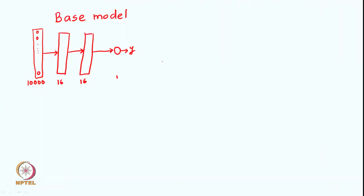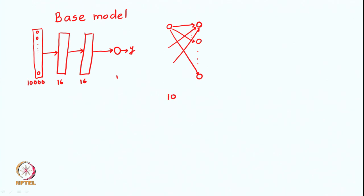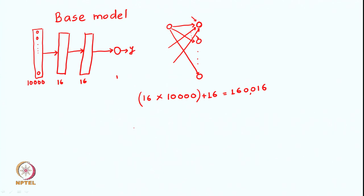Each of the 10,000 input units is connected to the 16 hidden units. For a single hidden unit there are 10,000 parameters, and there are 16 such units. Each unit also has a bias term, so we add 16, giving us 160k parameters for the first hidden layer.